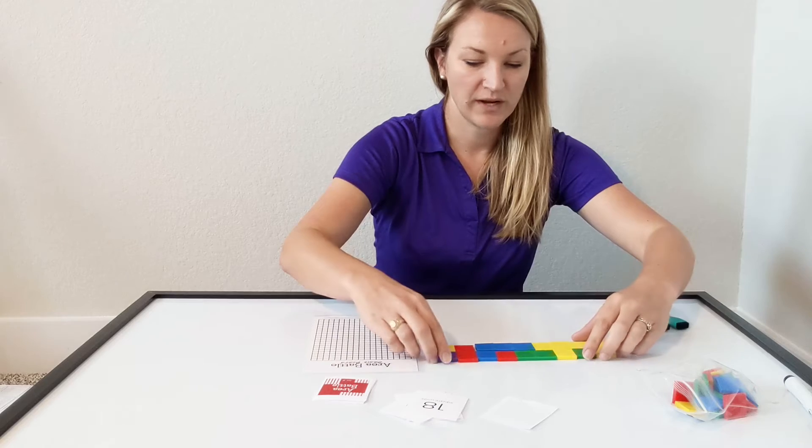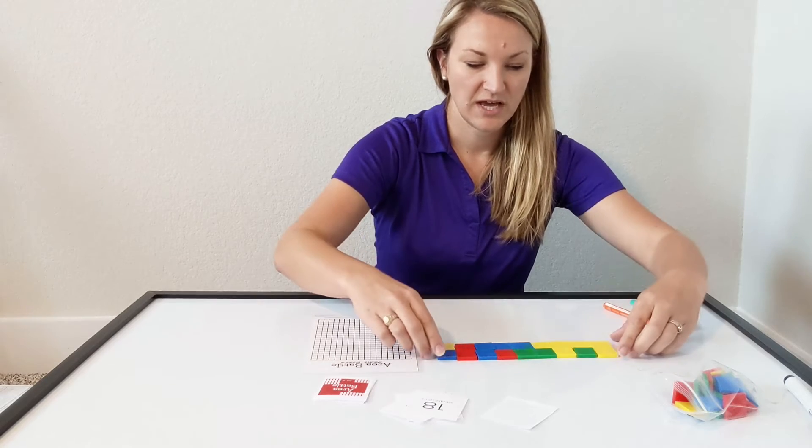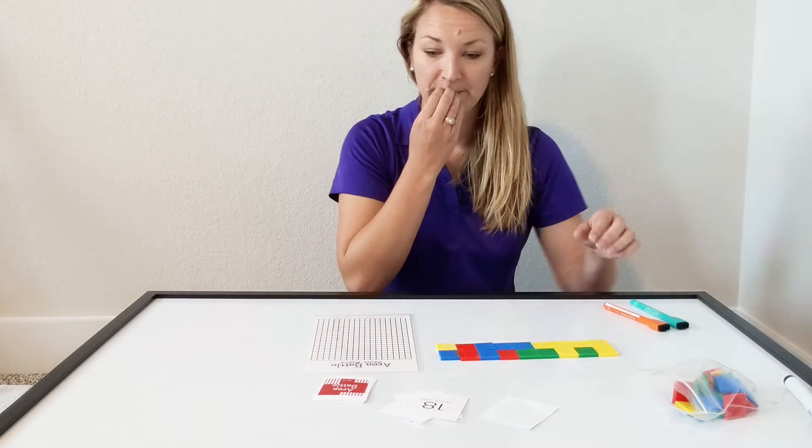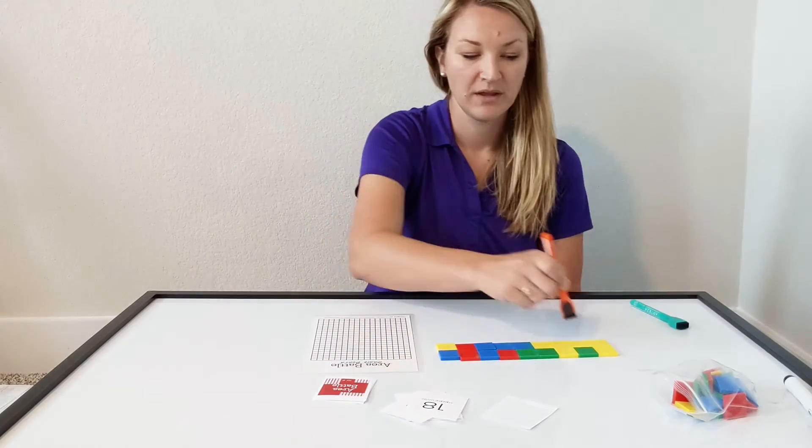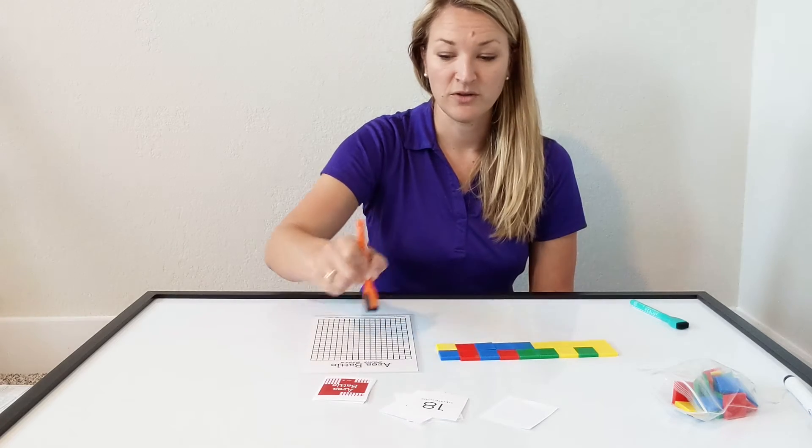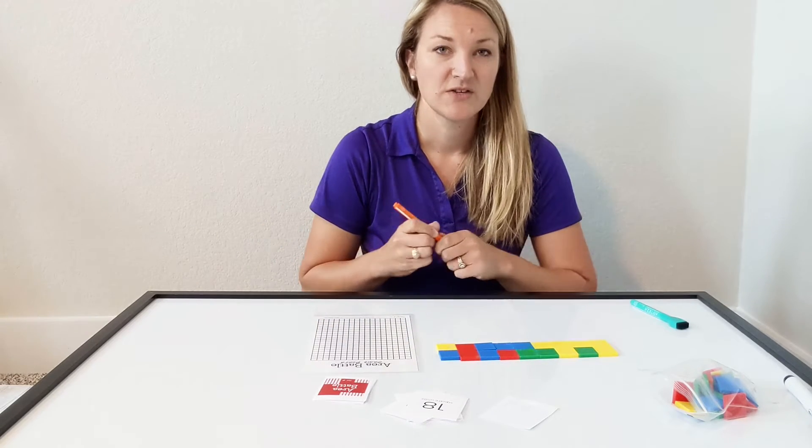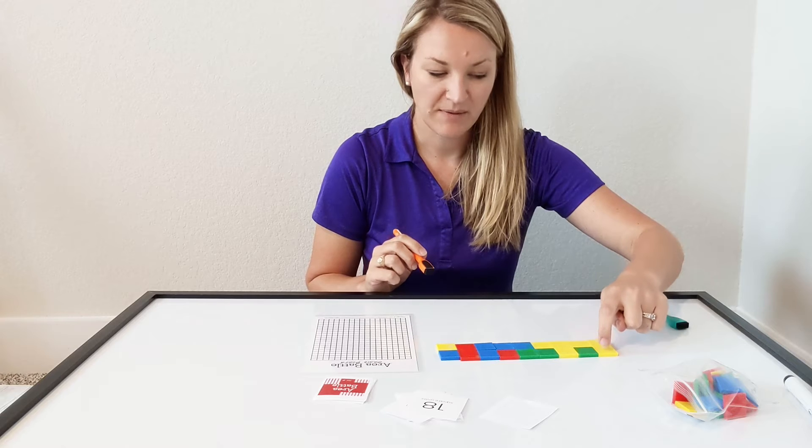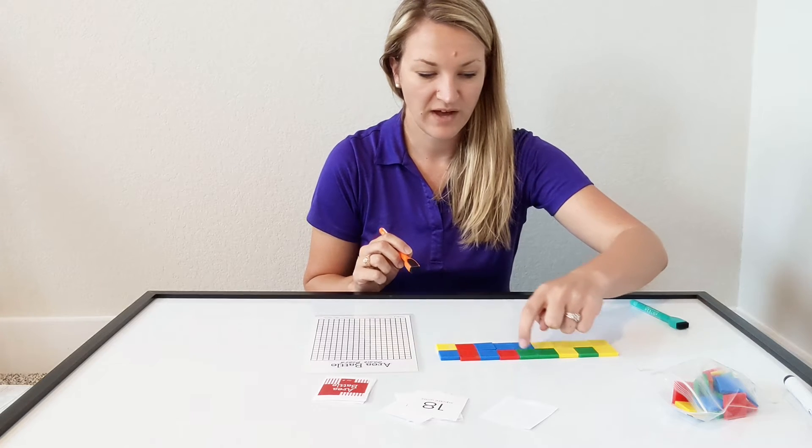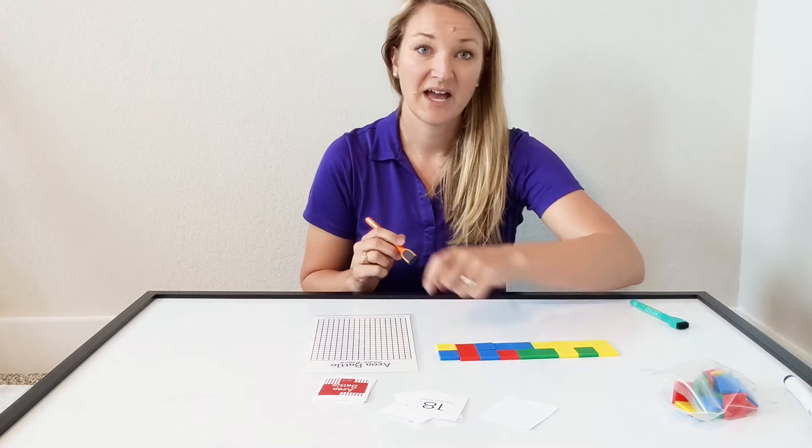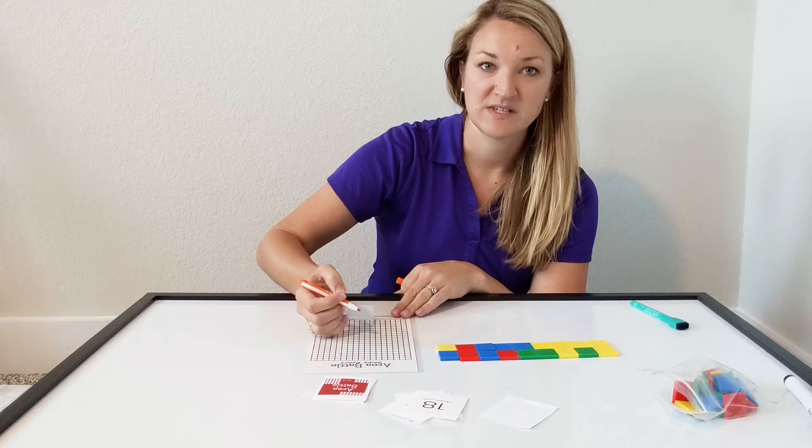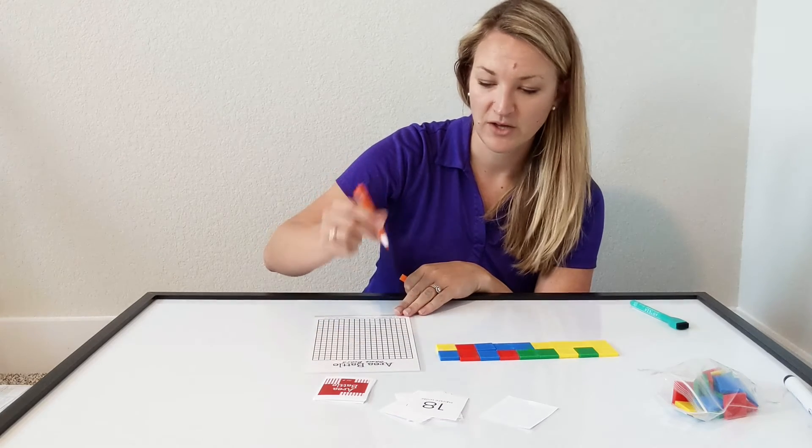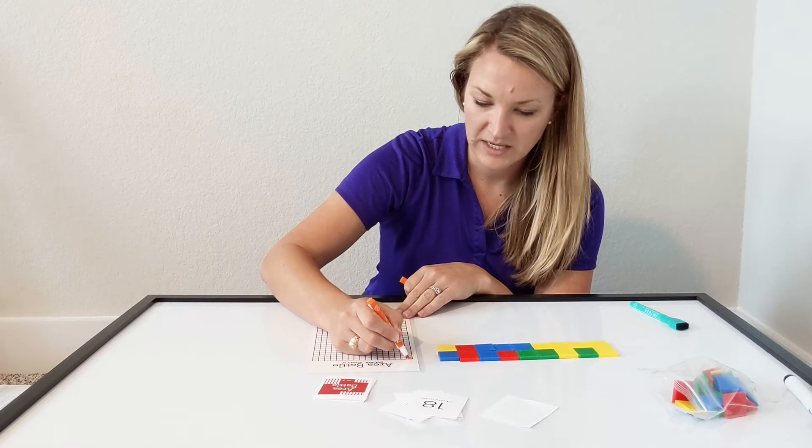Once they find a way to arrange their tiles into a rectangle, they will then transform that physical model into a pictorial model. They look at their tiles and say, okay, across the top I have 1, 2, 3, 4, 5, 6, 7, 8, 9 squares. So somewhere on their Area Battle board using their color, they will color in 9 squares.